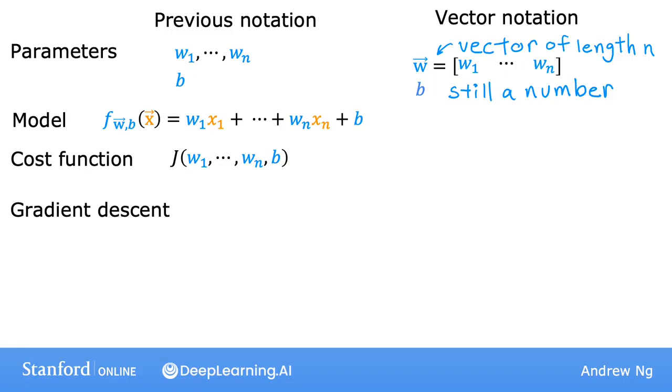Whereas before we had defined multiple linear regression like this, now, using vector notation, we can write the model as f_wb(x) equals the vector w dot product with the vector x plus b. And remember that this dot here means dot product. Our cost function can be defined as j(w1 through wn, b). But instead of just thinking of j as a function of these n different parameters wj as well as b, we're going to write j as a function of parameter vector w and the number b. So this w1 through wn is replaced by this vector w.